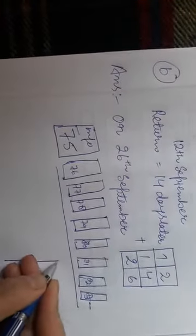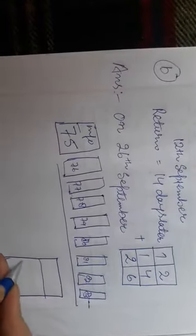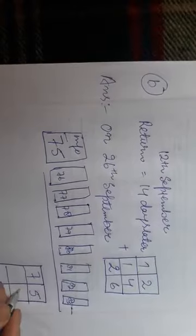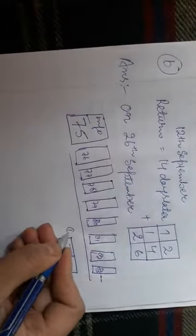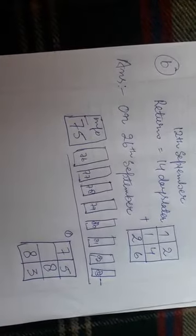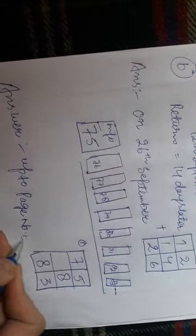Now we have to do this using columns. If the starting page is 75 and 8 pages will be read, then in total: 5 plus 8 is 13, write 3 carry 1; then 7 plus 1 is 8. So the page number is 83. The information goes up to page number 83.